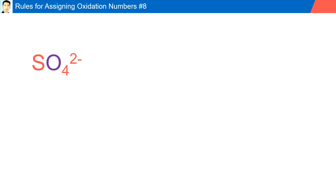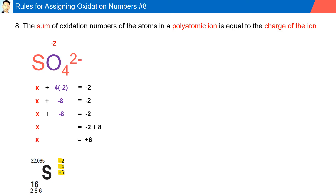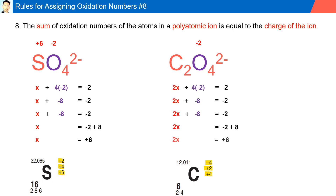Rule number eight: the sum of oxidation numbers of atoms in a polyatomic ion is equal to the charge of the ion. In sulfate SO₄²⁻, the net charge is minus two; oxygen is minus two with four oxygens giving minus eight, so sulfur must be plus six. In C₂O₄²⁻, oxygen is minus two with four oxygens; solving for carbon gives a plus three charge. Even though plus three is not listed on the chemistry reference table for carbon, it can still exist.